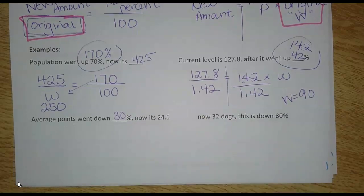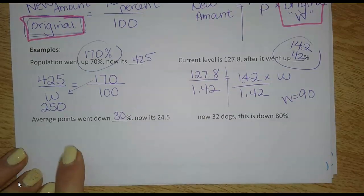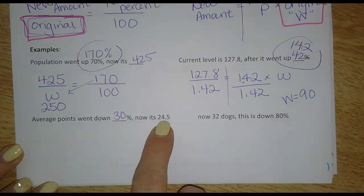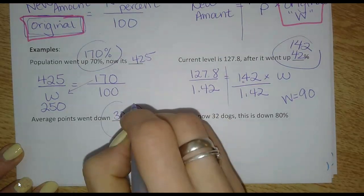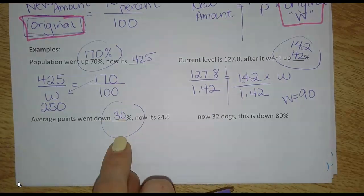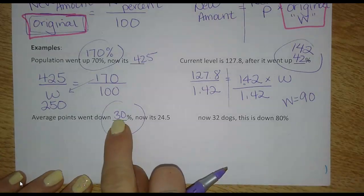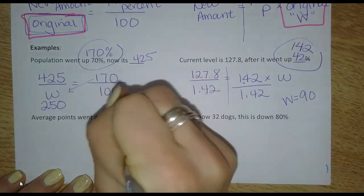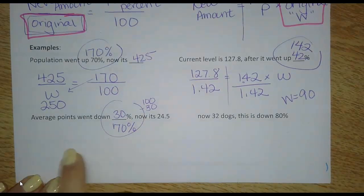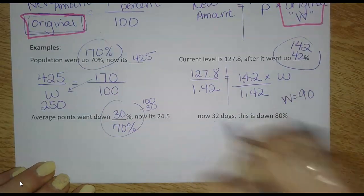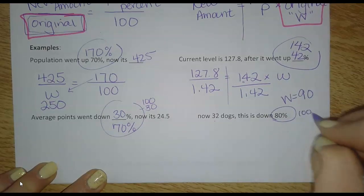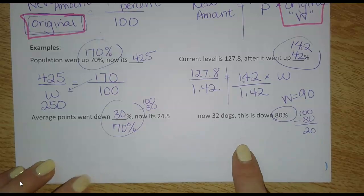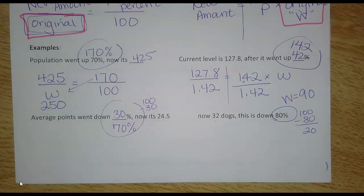So I want you to try these next two. Maybe do one with the proportion, one with the equation. So this one says it went down 30%, and now it's at 24.5. Remember, you're going to have to do something with that. It went down 30%. So what is it now? If you recognize that this is a decrease, it's going to come off the 100. So it was 100. It went down by 30. So now I'm at 70. Make sure you use 70 in your proportion. Or in this case, now it's at 32. This is down 80%. Well, if it was at 100 and it went down 80%, now it's at 20. So make sure you use 20 in your equation here. So try setting these up. Pause and check your answers when you're ready.